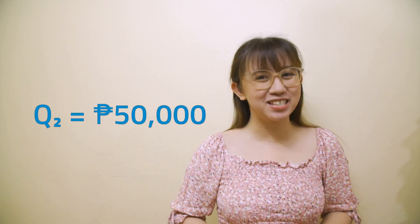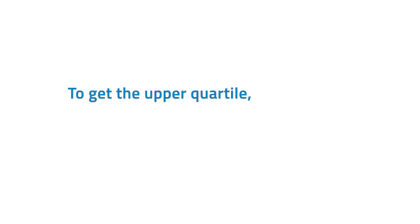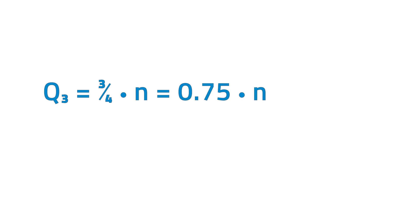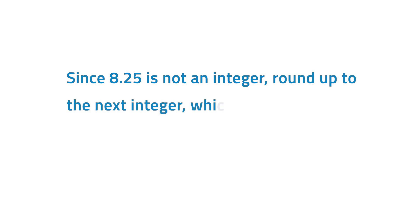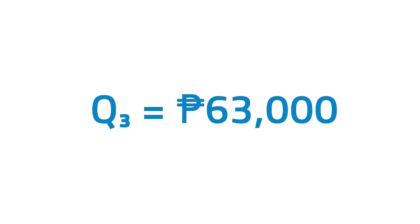The second quartile is the median, so Q2 = 50,000 pesos. To get the upper quartile, get 75% of N. That is, Q3 = 0.75 × 11 = 8.25. Since 8.25 is not an integer, round up to the next integer, which is 9. The third quartile is the ninth value. Thus, Q3 = 63,000 pesos. There are 75% of the data set below 63,000 pesos and 25% are above it.